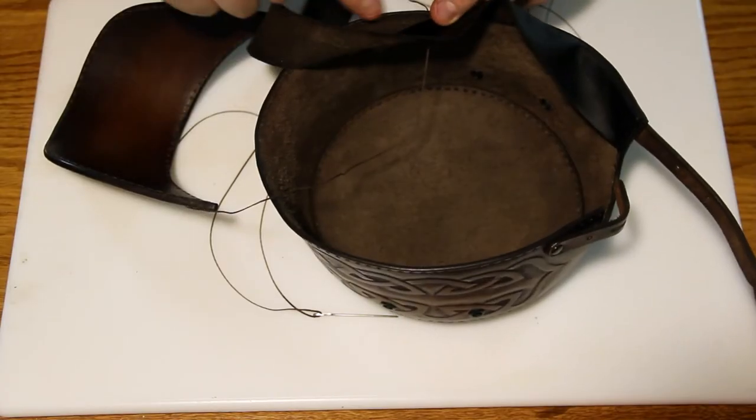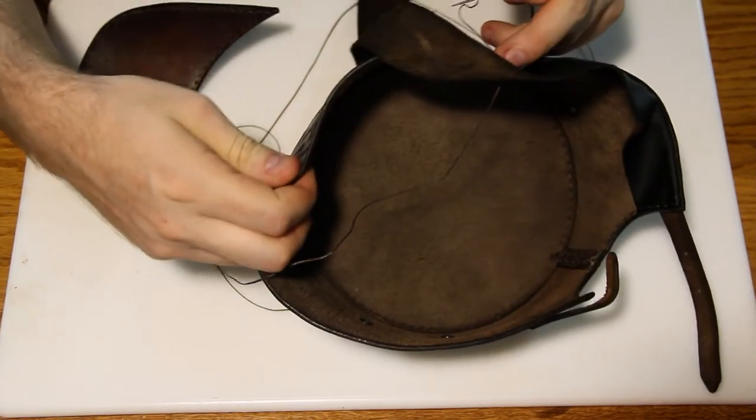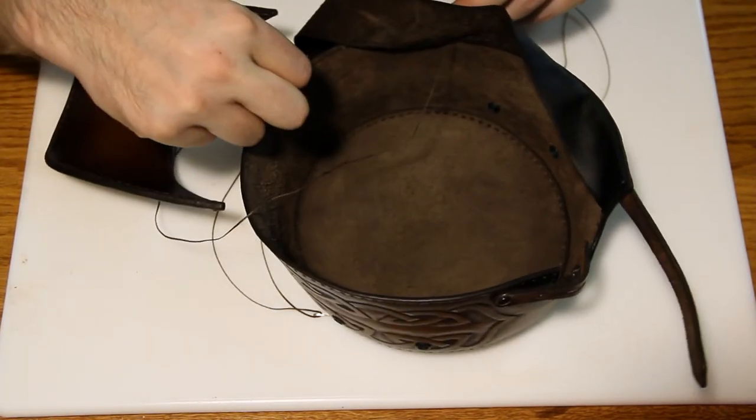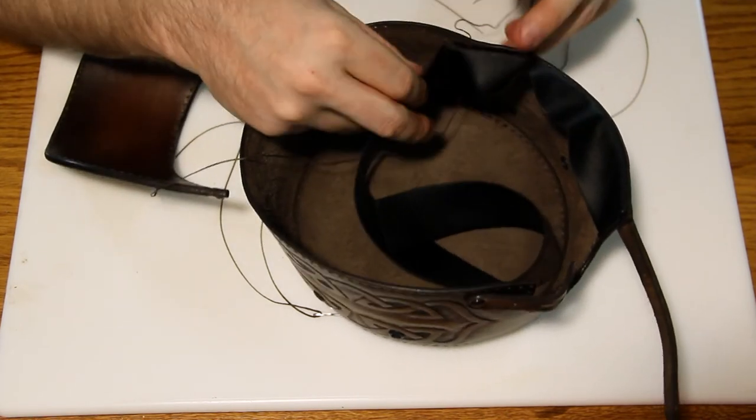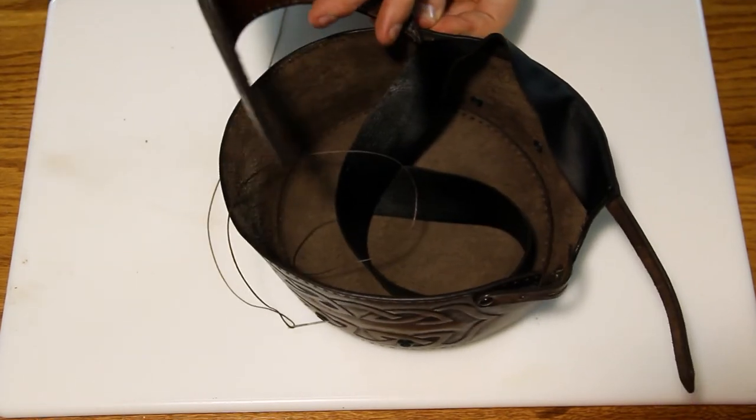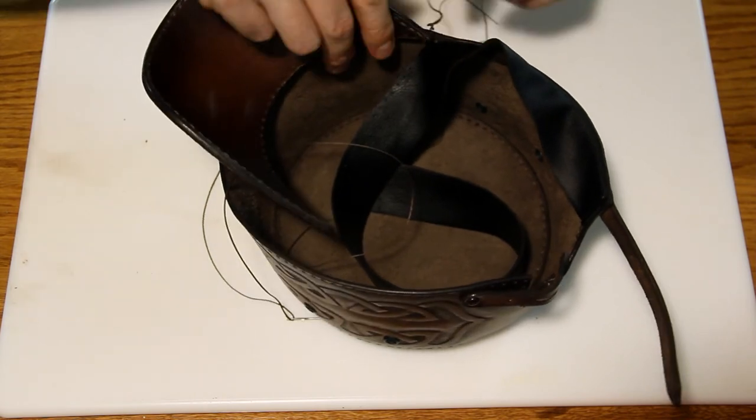So now time to start counting those holes because here's when you're going to start working in the visor. Find out where the center of the hat is and you're going to want to stitch in the visor underneath the sweatband.